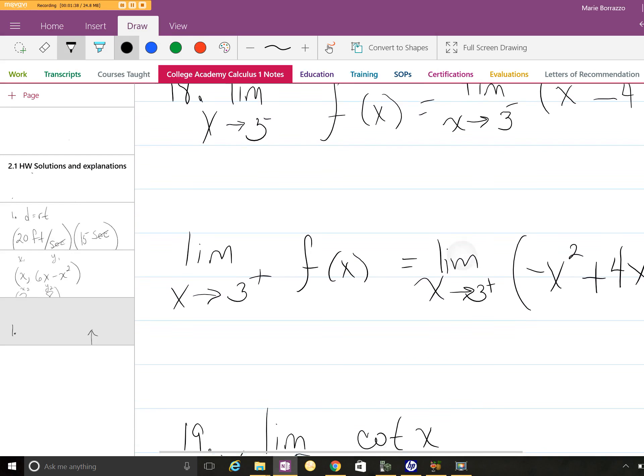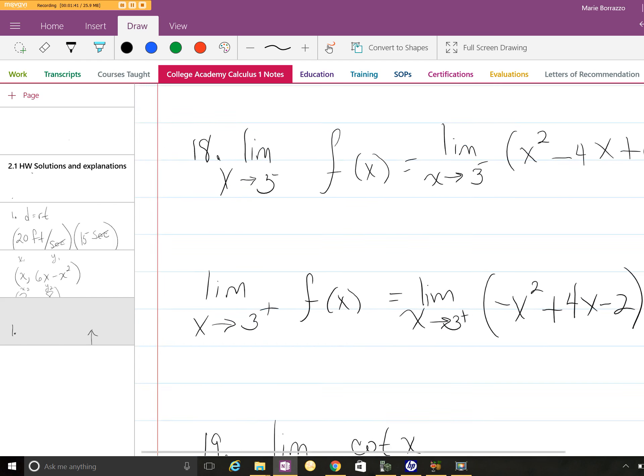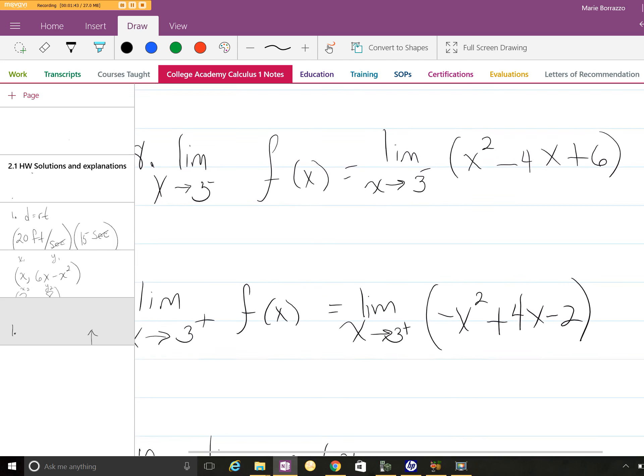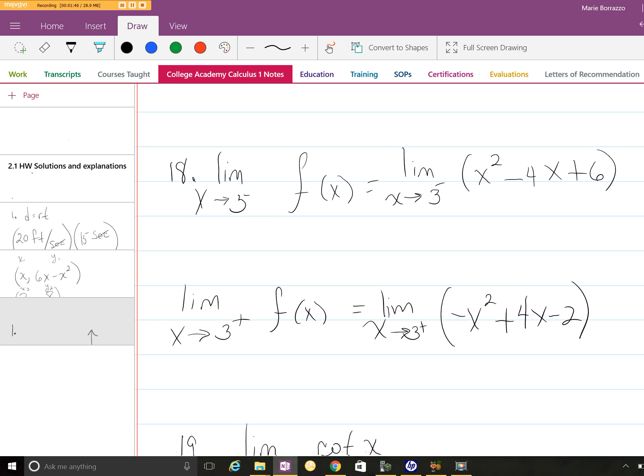Alright, but let's look at number 18. Number 18 has got a lot of parts to it. This says the limit as x approaches 3 from the left. We're given the function f(x) is x² - 4x + 6. So we'll plug it in: 3² - 4(3) + 6. This gives you 9 - 12 + 6, and so our limit for this part of the function is 3.